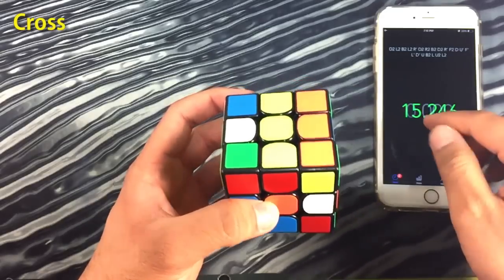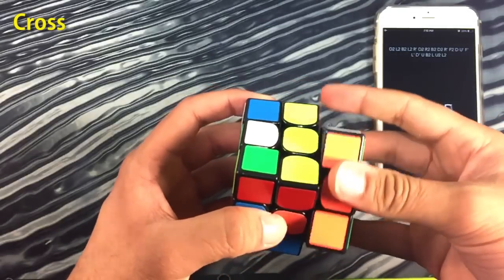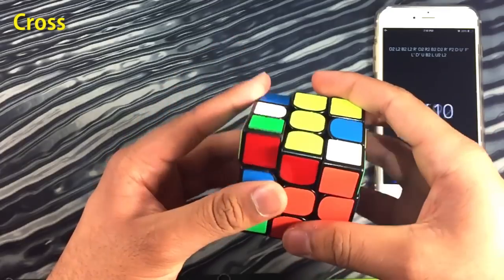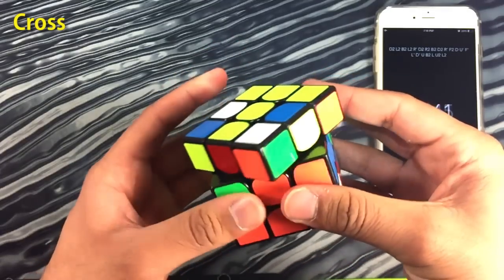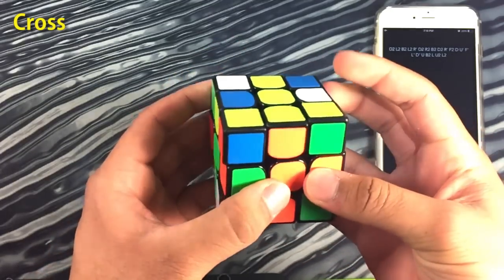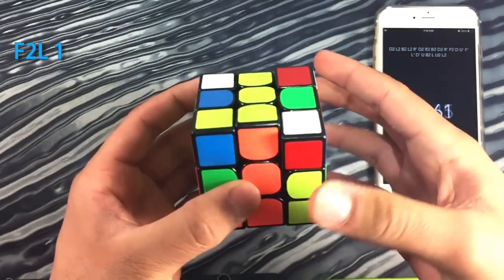So to start off this solve, I did a quick R' to insert the orange edge piece and then I aligned the cross. From there I inserted the green edge piece and then I did a U2 to move the blue one over and insert that.